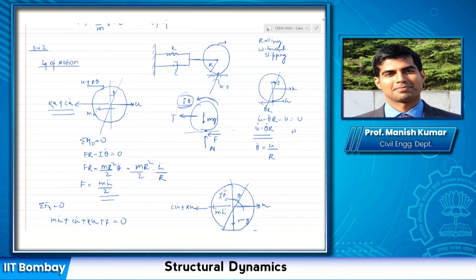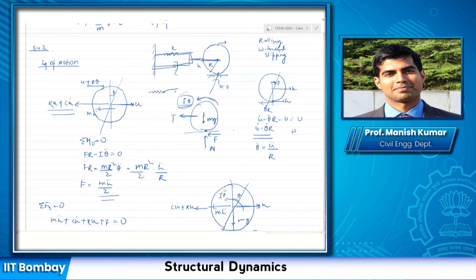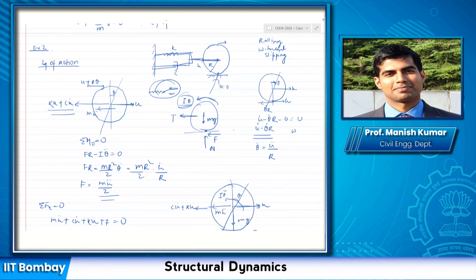For small rotational and translational displacements, the component of spring force in the horizontal direction due to rotation is very small and can be neglected. This is a standard small-displacement assumption. The spring and damper forces are therefore determined entirely by the translational displacement u and velocity u̇ of the disk's center.